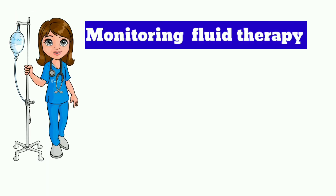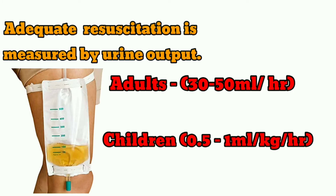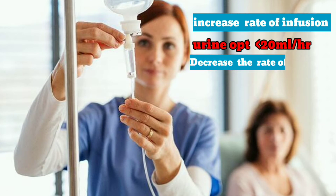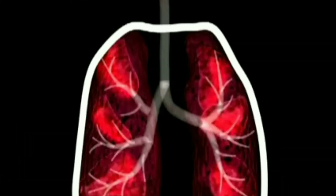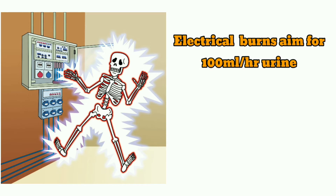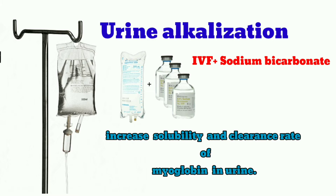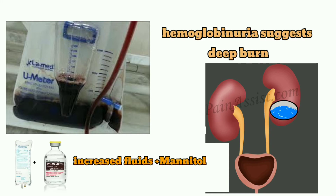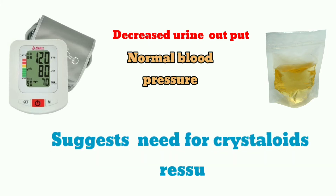Monitoring fluid therapy: adequate resuscitation is measured by urine output — in adults 30 to 50 mL/hour, and in children 0.5 to 1 mL/kg/hour. Increase the infusion rate if urine output is less than 20 mL/hour, and decrease it if greater than 60 mL/hour due to risk of pulmonary edema, especially in inhalation injury. In electrical burns, aim for 100 mL/hour of urine to flush the kidneys. Alkalization of urine by adding sodium bicarbonate to IV fluid increases solubility and clearance of myoglobin. Hemoglobinuria suggests deep burn; flush kidneys with increased fluid and mannitol. Decreased blood pressure and urine output suggests need for colloids; decreased urine output with normal blood pressure suggests need for crystalloids.